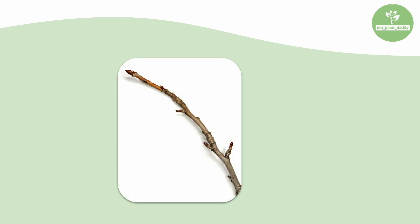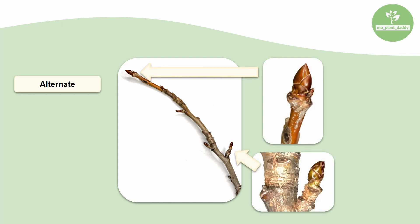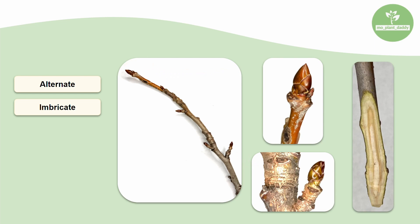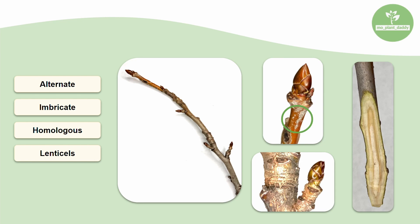Now that we've learned some of the basics of twig identification, let's recap what we've learned with an example. Here is an unknown twig. The first thing we should do is see whether it is opposite or alternate. The twig is alternate, so we will now want to focus in on the apical and lateral buds. Looking at both of them, the apical bud is just a larger version of the lateral bud. Something you might notice is that there are very prominent bud scales on these buds and they are arranged in an imbricate pattern, which is when the bud scales are overlapping each other. If we take a look at the pith, we'll see that it is solid, so it is homologous. Lastly, I see some lenticels, and additionally, this species has buds that sort of remind me of beetles because they are really shiny. It's Liquidambar styraciflua, otherwise known as the sweet gum.